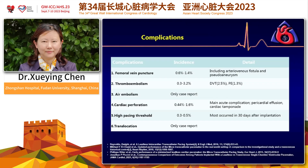We should get familiar with all the procedures to minimize major complications. For Micra, the published complications include things related to femoral vein puncture — sometimes arteriovenous fistula and possibly aneurysm. Other things include thromboembolism. Although the incidence is not quite high, around 3%, it may cause very severe outcomes like PE or DVT.